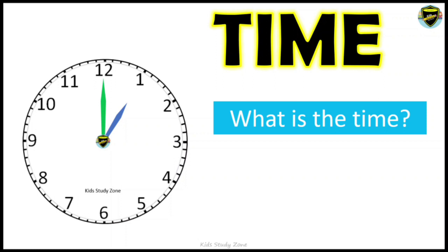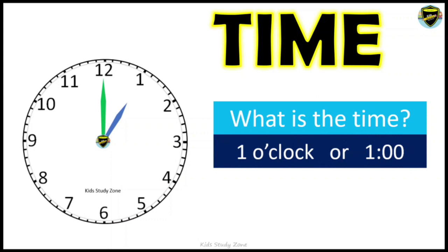Now let's see what time it is. Look at the picture — the minute hand is on 12 and the hour hand is on one, so the time is one o'clock. You can either write 'one o'clock' or in digital format. Remember: the minute hand will be on 12, and the hour hand points to a particular number — whatever number it points to, that is the hour.